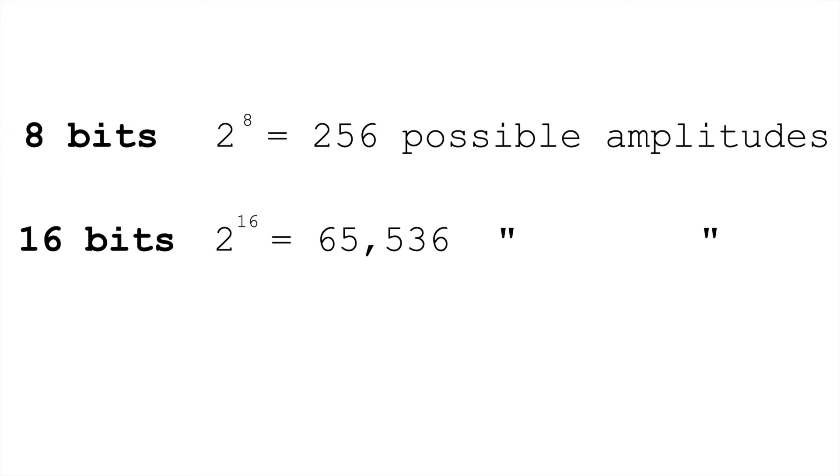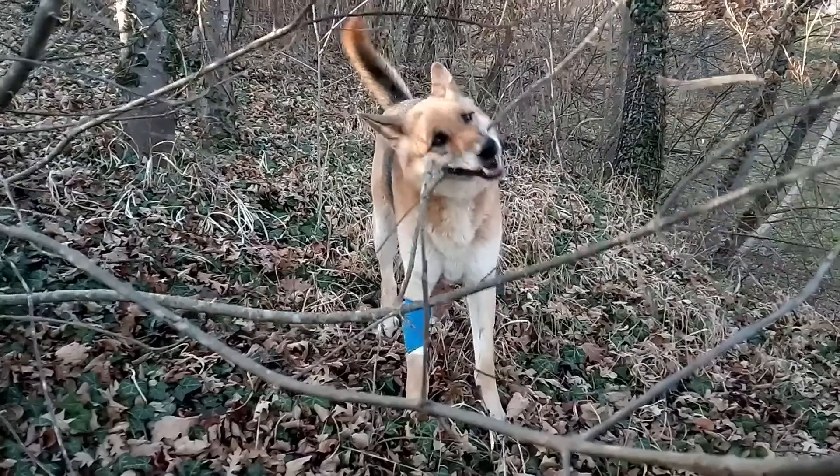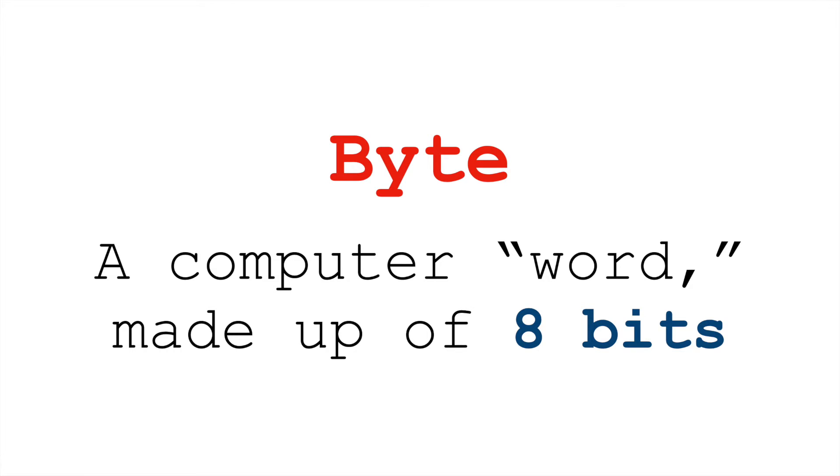With eight bits, two to the eighth power, we can represent 256 different amplitudes. 16 bits, two to the sixteenth power, 65,536. 24 bits, two to the twenty-fourth power, 16,777,216. And so on. The reason we're counting up by eight here is because eight bits is a byte. A byte is a computer word and a common unit to work within computers.